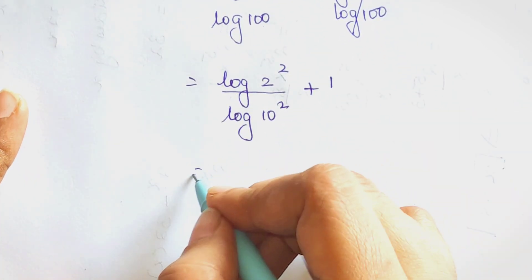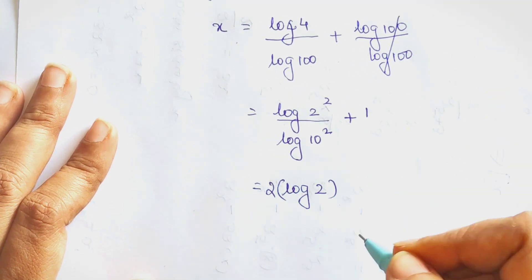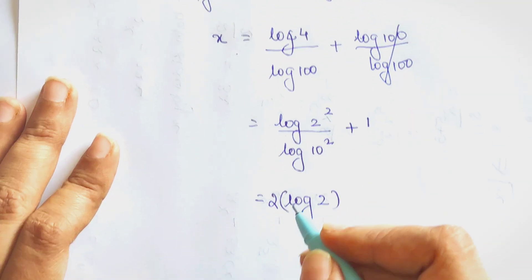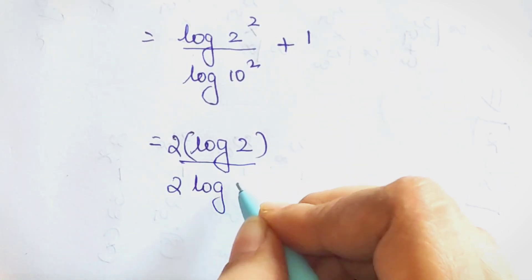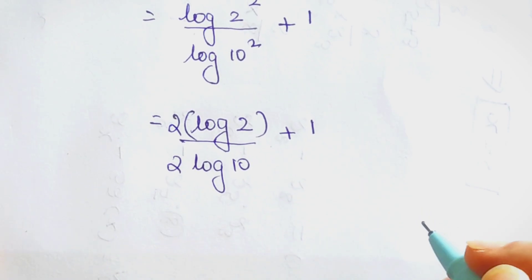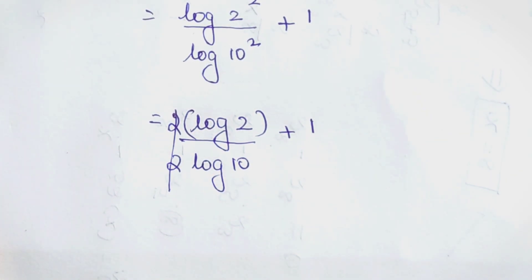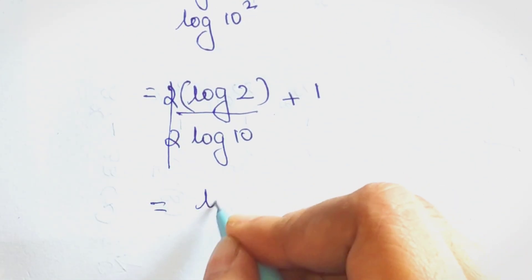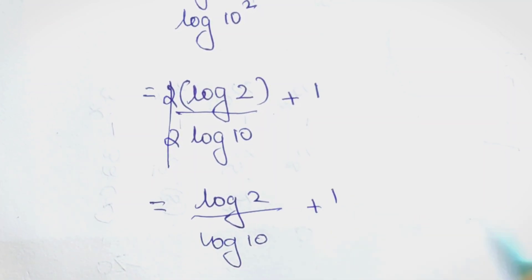We can rewrite this as log of 2. We take the 2 ahead using the same property, giving us 2 into log 2 over 2 into log 10, plus 1. The 2s cancel, and the answer now looks like log 2 upon log 10, plus 1.